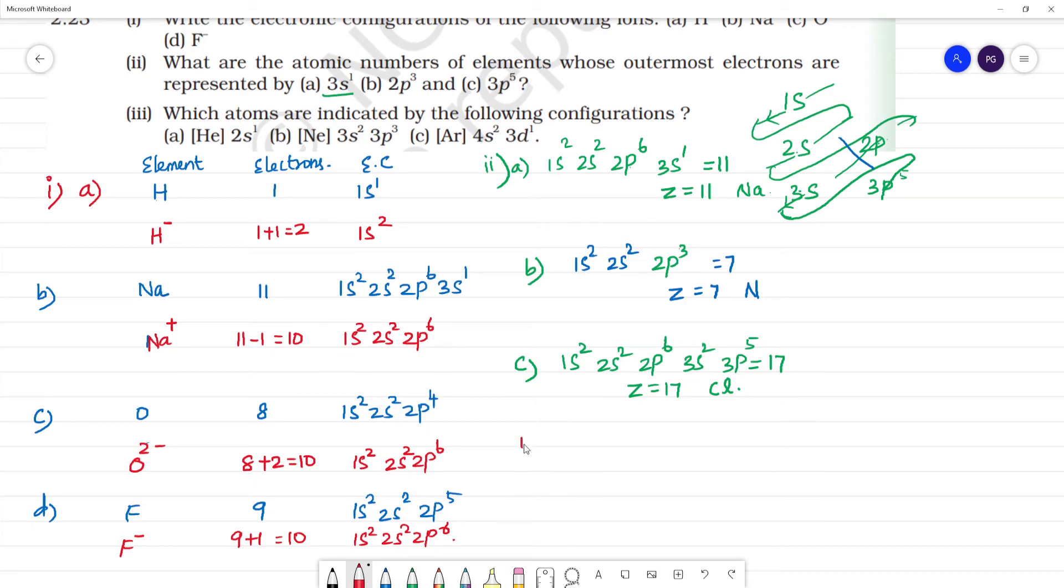A is helium 2s1. Helium has atomic number 2, so we have 1s2, 2s1. Total number of electrons is 3, so this is lithium. Lithium has 3 electrons. Next,